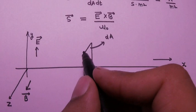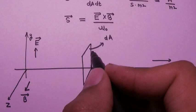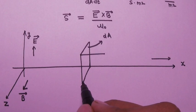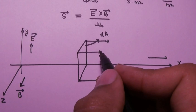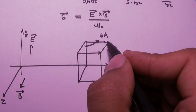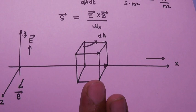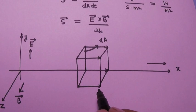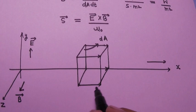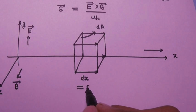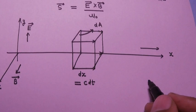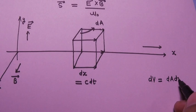The electromagnetic wave travels with the speed of light c, so in time interval dt the energy that crosses this cross-sectional area will travel a distance dx. The energy that crosses the cross-sectional area dA is the same energy located in this infinitesimally small volume element, whose length is dx — the distance traveled by the electromagnetic wave in time interval dt — so dx equals c·dt.